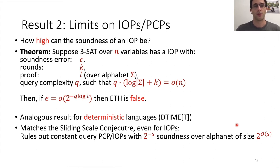So I want to move on to theorem number two, result number two. So this is limits on IOPs and PCPs. Our main question here is, how high can the soundness of an IOP be? And the theorem says the following. Suppose that 3-SAT over n variables has the following IOP. It has soundness error epsilon, it has K rounds, the proof length, the entire communication is L over some alphabet sigma, and the query complexity is q. Such that this condition holds. And this condition merely says that it's a non-trivial IOP, because if you read n bits, then really you could have just read the entire satisfying assignment. So just really saying that this is a non-trivial IOP.